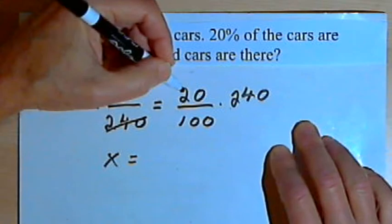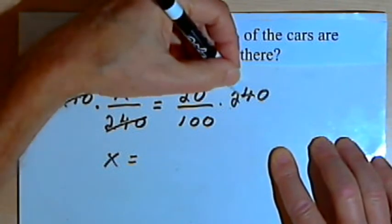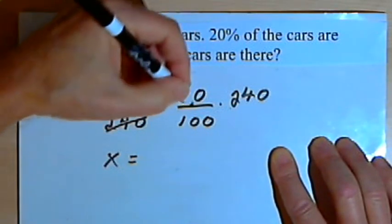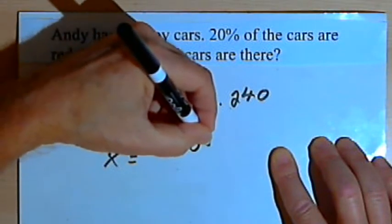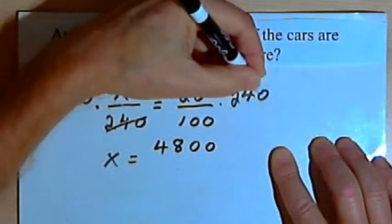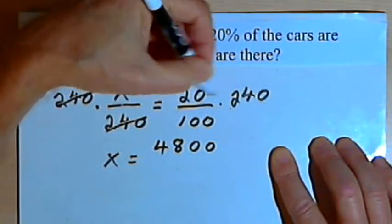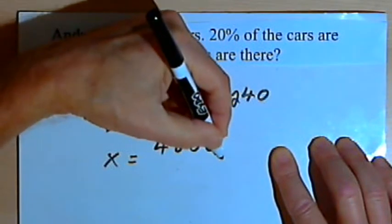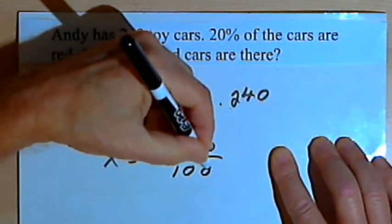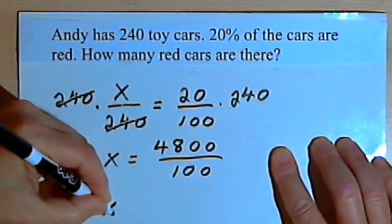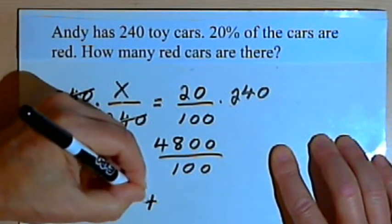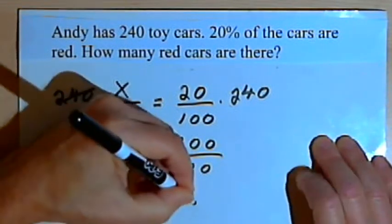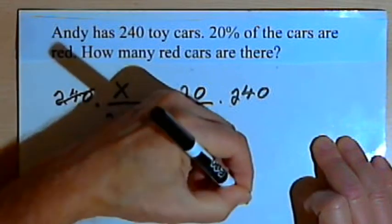On the right side of the equation, I have to multiply 20 times 240. Well, 2 times 24 is 48. And then I'll add two more zeros for each of the zeros that I had in those numbers. And I've got to divide that by 100. So that's going to mean that I have x equal to 48. That's going to be the number of red cars.